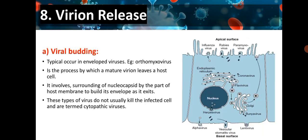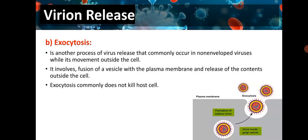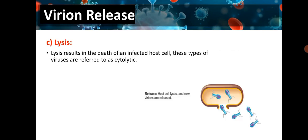Last is virion release, which can occur through various mechanisms. First, viral budding — typically in enveloped viruses such as orthomixoviruses — is the process by which a mature virion leaves the host cell by surrounding the nucleocapsid with part of the host membrane to build its envelope; these viruses do not usually kill the infected cell and are termed cytopathic. Second, exocytosis commonly occurs in non-enveloped viruses: the vesicle fuses with the plasma membrane and releases contents outside the cell without killing the host. Third, lysis results in the death of the infected host cell; these are cytolytic viruses, for example bacteriophages.